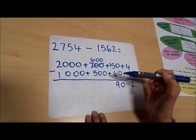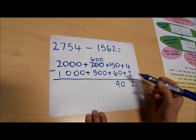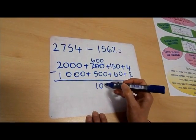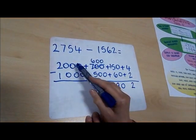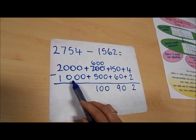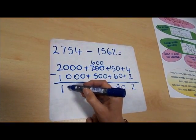Then 600 take away 500 is 100. And 1000 take away 1000 is 0.